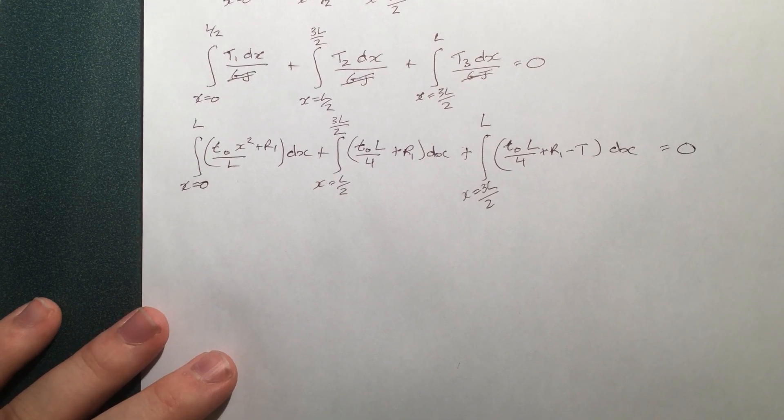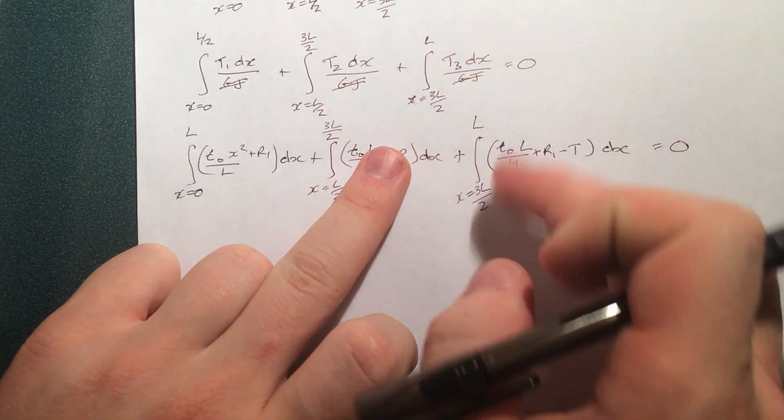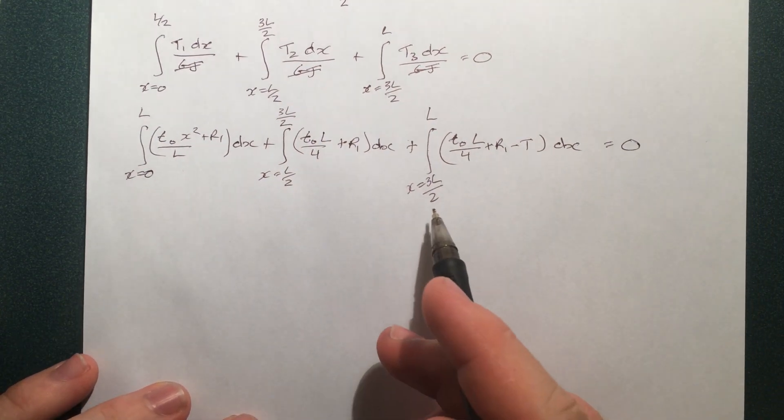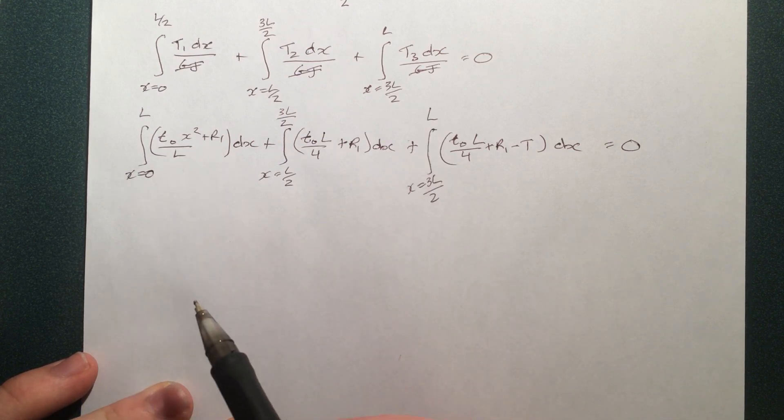So notice that these two here are constant, so basically we can take this whole piece out and just times it by this bit of length that's described by that interval of length, or the boundary limits. And of course, we actually have to integrate this one.